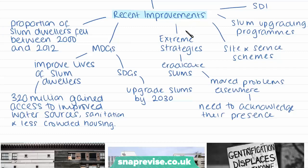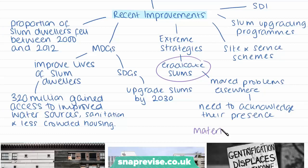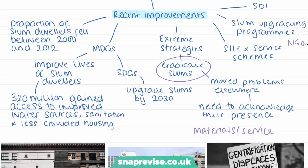Now we're going to look at some of the recent improvements to slums. In the past, a lot of strategies adopted by authorities were very extreme — their aim was to eradicate slums. However, this didn't have a great effect and simply moved the problem elsewhere. A more common approach became to acknowledge their presence and provide help in the form of materials or services. These self-help schemes proved really successful in many slums across different cities. However, the quantity and quality of housing remains inadequate in most urban areas around the world.